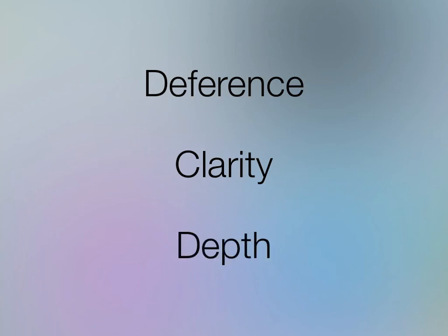Deference, clarity, and depth are the three principles of iOS 7 according to Apple. When you think about them, they do make sense. Deference means your UI shouldn't be overbearing. Clarity means your UI should be as simple as possible while still maintaining needed features. Depth means you should use visual cues from iOS to help users understand what's going on. Apple just described it in a way that apparently borrows from Google's, as we know, amazing design sense.